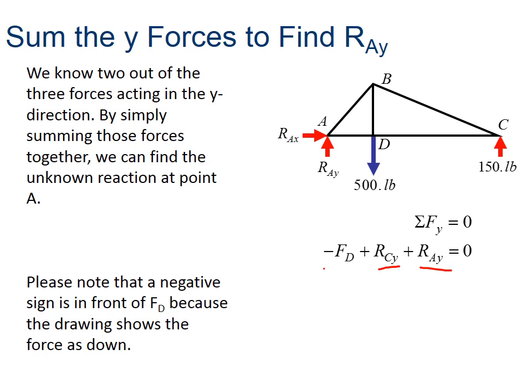And our AY, we don't really know. We have it pointing up. So let's find out if that's true. Let's plug in our numbers. FD is 500 pointing down. It's negative. We calculated on the last slide that RCY is 150 pounds up. And so our only unknown then is RAY. When we do the math, we find then that RAY is 350 pounds. It's positive, which means our arrow pointing up is correct.